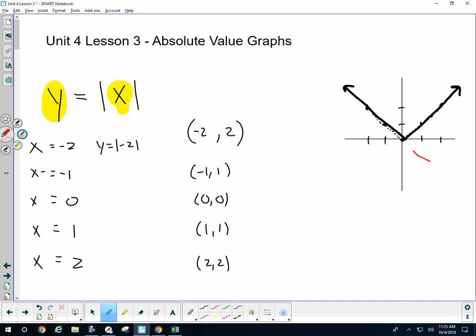One distinct characteristic is that point right there. That point is what we call the vertex. Now, the vertex occurs at the minimum value of our absolute value.